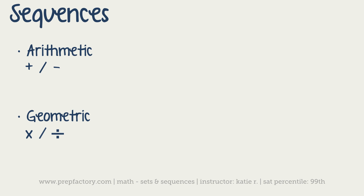For each type you have a formula, though you don't always have to use it — I'll show you both ways. For an arithmetic sequence, the formula is a_n = a_1 + (n − 1) · d, where d is the common difference, a_1 is the first term, and a_n is the nth term, which is usually what you're looking for.